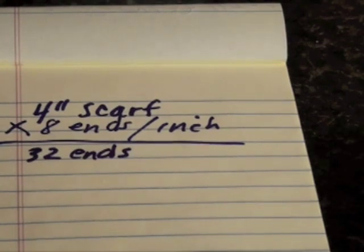Let's assume for our scarf that we want it to be 2 yards long, including the fringe. So that would be 72 inches long. So I'll need each one of my ends to be 72 inches long.